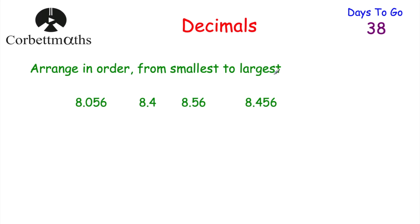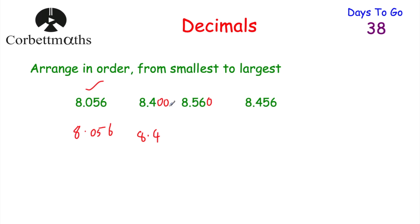This time I'm going to make them the same length first. The longest number has three decimal places, so I'll put two zeros on the end of 8.4 and one zero on the end of 8.56. Now they're all the same length. The smallest is 8.056, the next smallest is 8.400 — or just 8.4 — then 8.456, and the biggest number is 8.56.